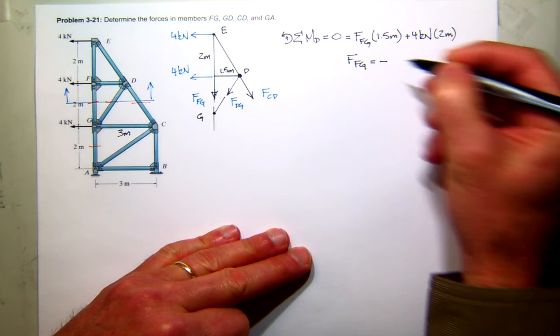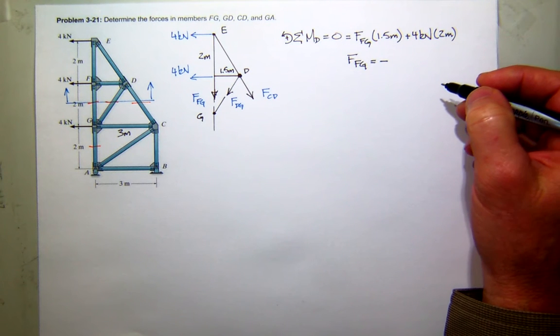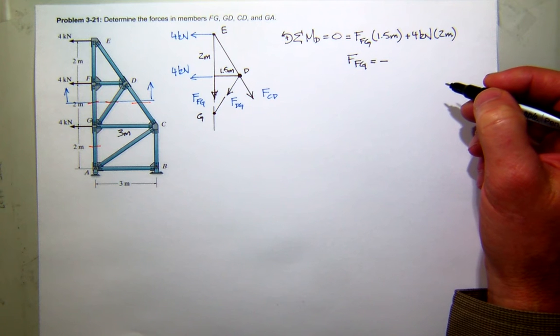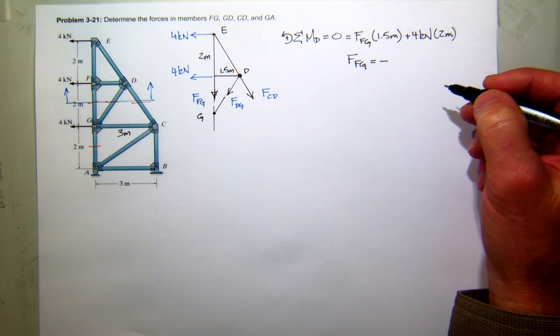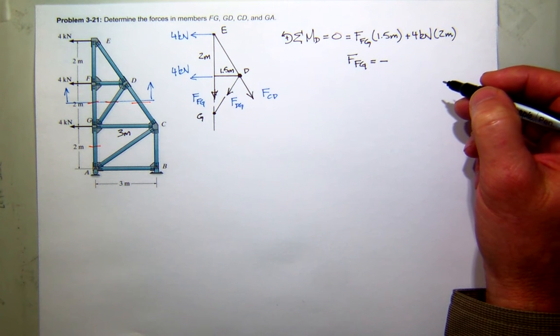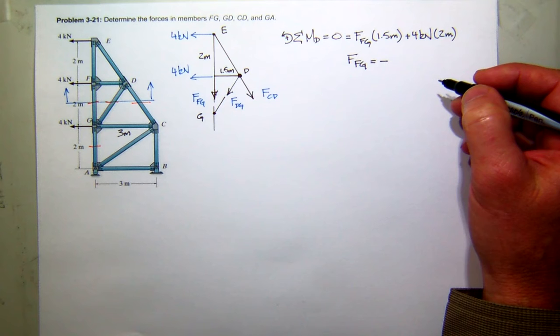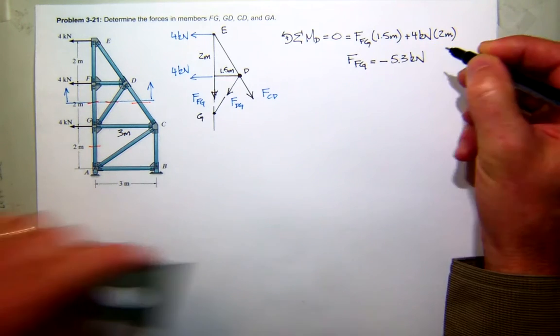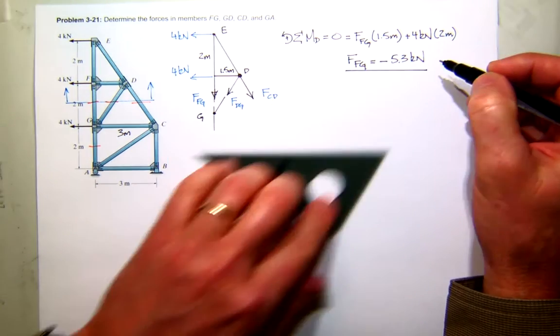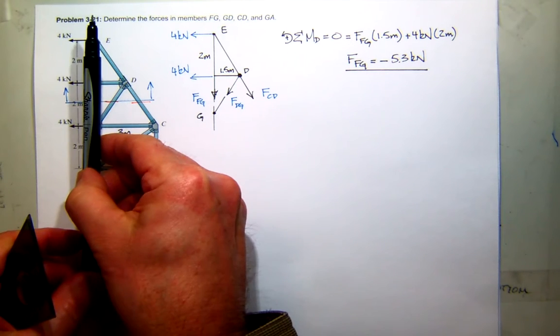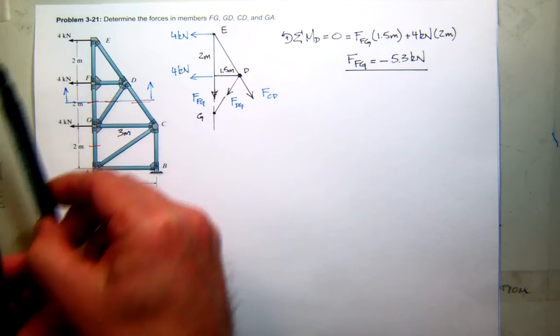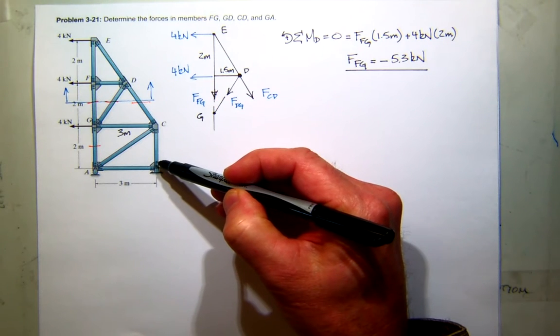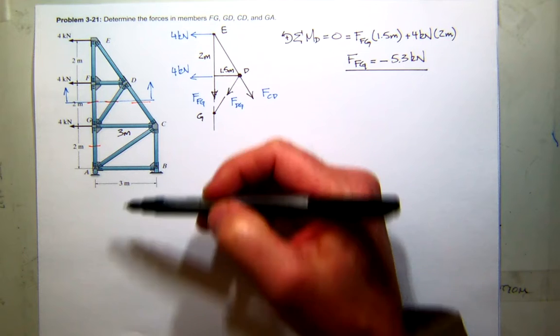So it looks like I can solve for the force in FG. It's five point three kilonewtons. And it's negative. Does that make sense that it's negative? Well, with all this force, it's trying to move the truss to the left, right? So I would expect that all these elements here are going to be in compression, and all these elements on the back side will be in tension. So that seems reasonable.